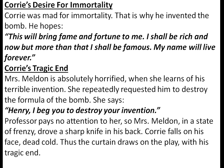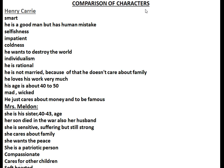A comparison of characters: Corey is the protagonist and Mrs. Melden the antagonist. Corey is intelligent but selfish, impatient, cold, destructive, individualistic, rational, unmarried, and obsessed with money and fame. Mrs. Melden is his sister, nearly 40 to 43 years of age. Her son died in the war. She is sensitive, suffering, but strong. She cares about family, humanity, and other people. She wants peace in the world and is compassionate, patriotic, and kind-hearted.